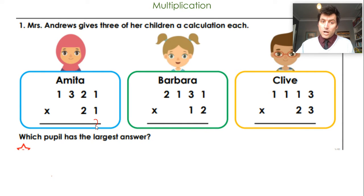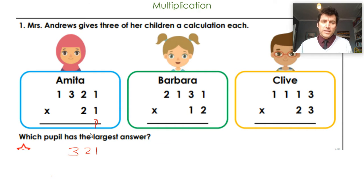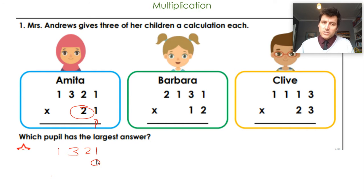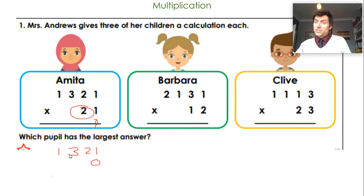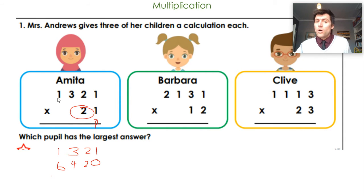What she'd do first is one times one which is one, then one times two which is two, then one times three hundred which is three hundred, and then one times one thousand which is one thousand — so she gets the same value as the initial factor. Then for the twenty times step, she first places a zero in the ones column because she knows she's doing multiples of twenty. Twenty times one is twenty, twenty times twenty is four hundred, twenty times three hundred is six thousand, and twenty times one thousand is twenty thousand.